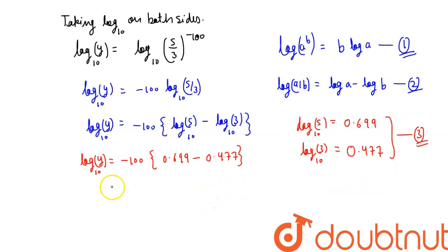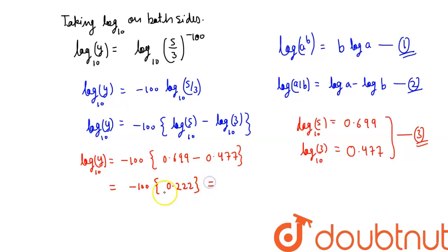Solving the subtraction: 0.699 − 0.477 = 0.222. Multiplying by −100 gives −22.2. So log₁₀(y) = −22.2.